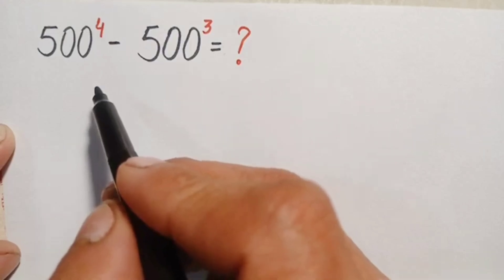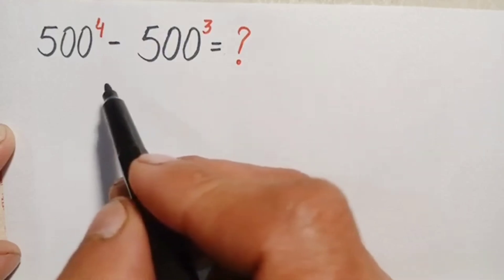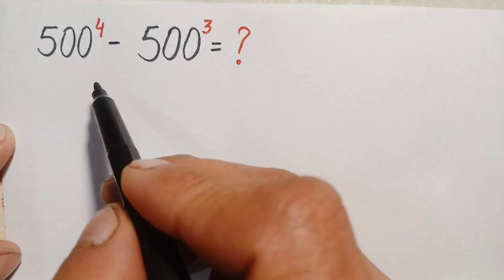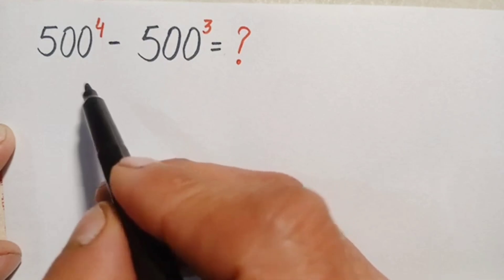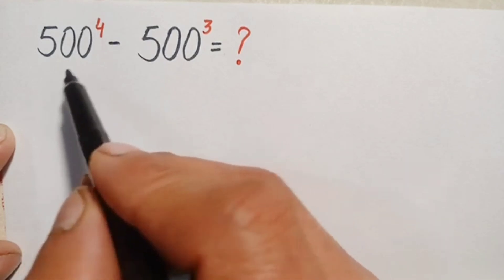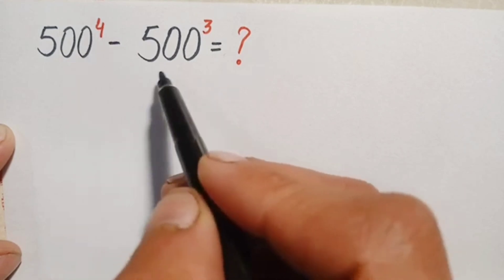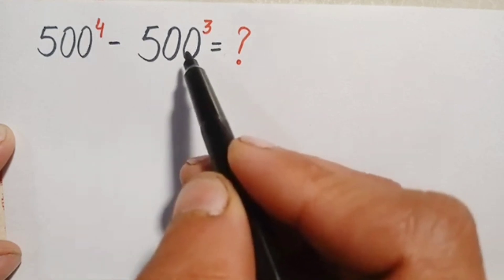Hello everyone, you are welcome to solve this beautiful exponential math problem without any calculator and without any rough work or standard multiplication, which is 500 to the power 4 minus 500 to the power 3.